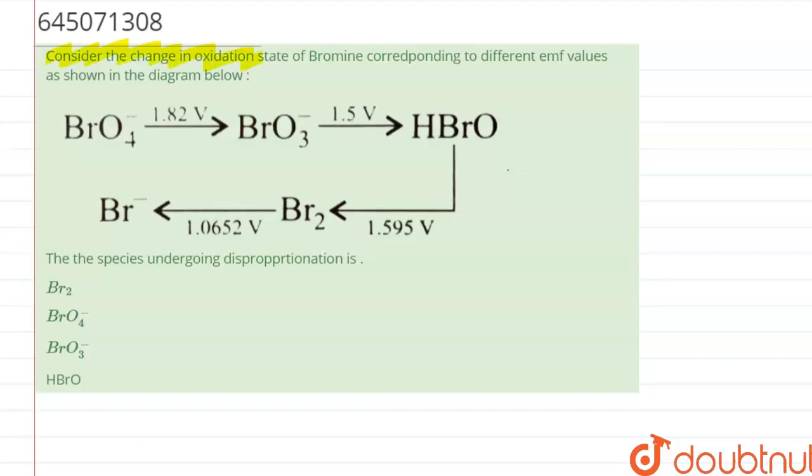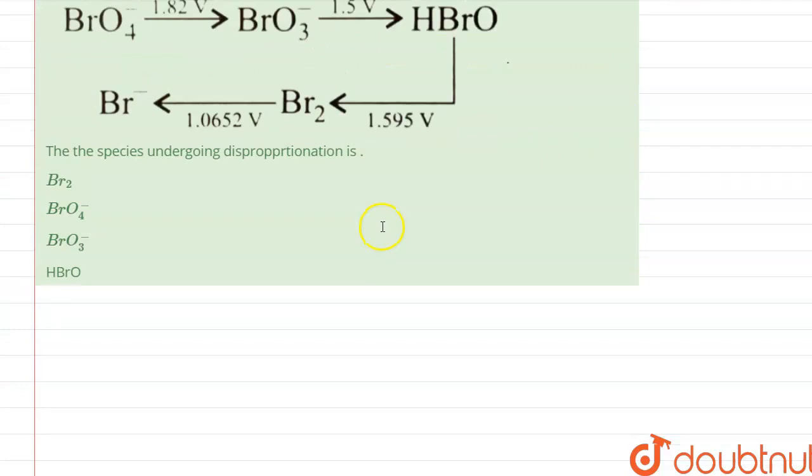...have been given: consider the change in oxidation state of bromine corresponding to different EMF values as shown in the given diagram. The species undergoing disproportionation is... Right, so basically the answer will be HBrO will disproportionate to BrO3 minus plus Br.